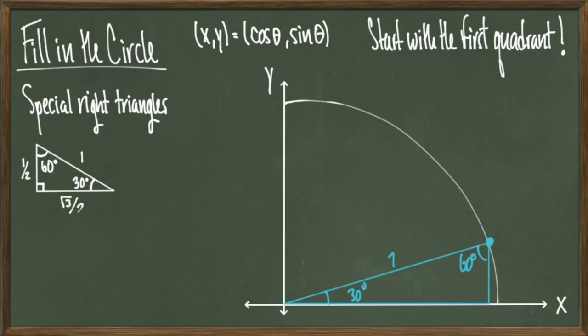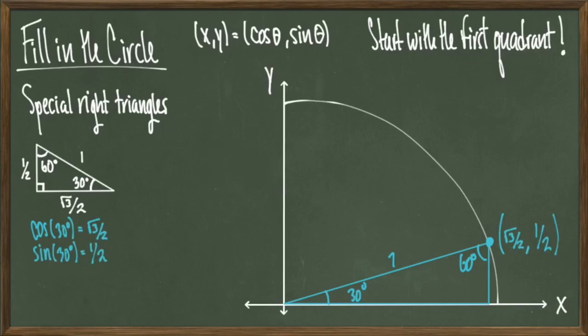The first inscribed angle I'll look at is 30 degrees lifted off of the x-axis. This inscribes us with the special 30-60-90 right triangle. Recall that if the hypotenuse has length 1, the sides are going to be 1/2 and root 3 over 2. The upper right point of this triangle touches the unit circle, so we compute the trig ratios of 30 degrees: cosine of 30 degrees equals root 3 over 2, and sine of 30 degrees equals 1/2. Therefore this triangle makes contact with the unit circle at the point (root 3 over 2, 1/2).